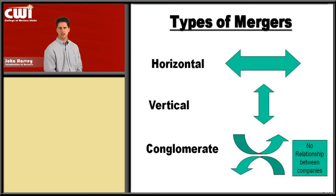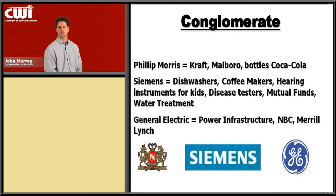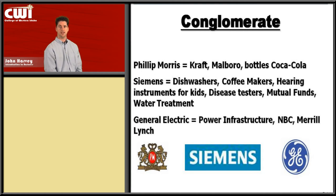A conglomerate is very interesting because there's no relation between the businesses. This is where a company is in everything. Examples include Philip Morris, which owns both Kraft and Marlboro. Siemens makes dishwashers but also does large-scale infrastructure building like bridges in other countries. General Electric provides power infrastructure and electricity, but also owns NBC, a broadcasting network. In a conglomerate, there's no relation — they're just buying up completely different companies and combining them all into one large company.